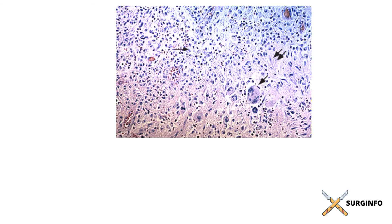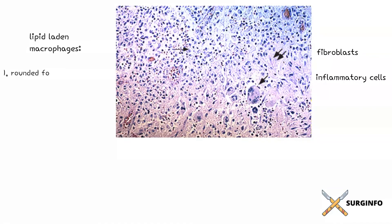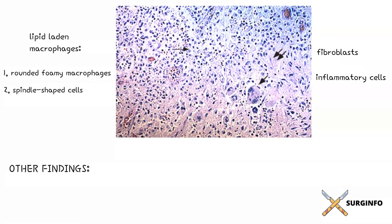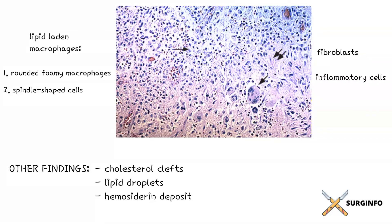Microscopically, the xanthogranulomatous foci are composed of abundant lipid-laden macrophages, fibroblasts, and inflammatory cells. The lipid-laden macrophages are of two morphological types: rounded foamy macrophages and spindle-shaped cells with more granular cytoplasm and elongated nuclei. Other findings include the presence of cholesterol clefts, lipid droplets, hemosiderin deposits, and extravasated bile.